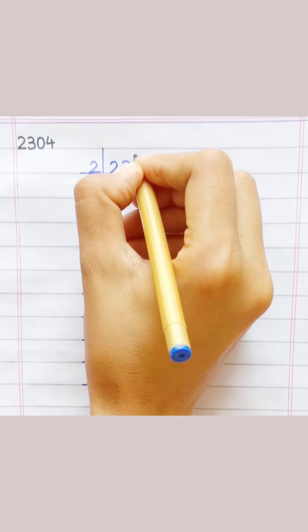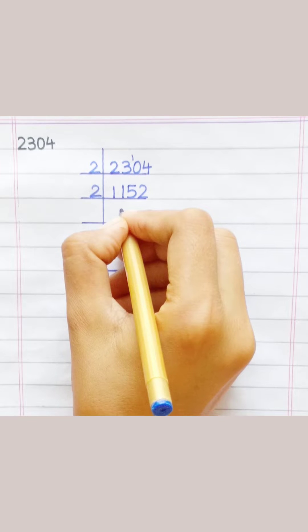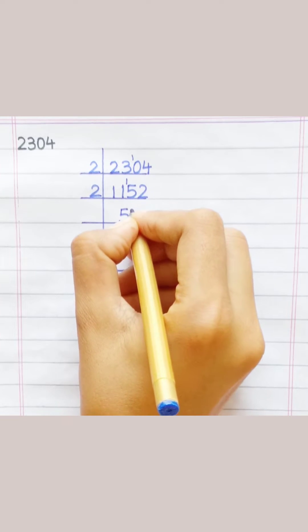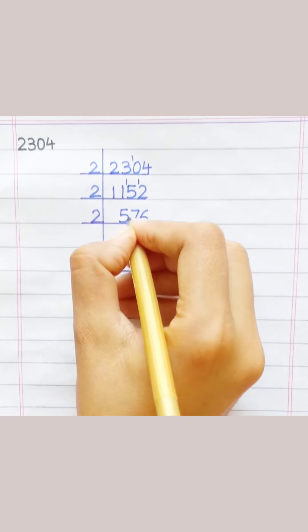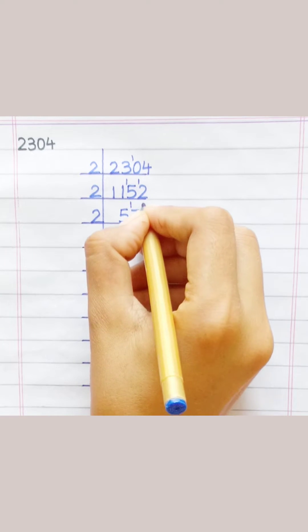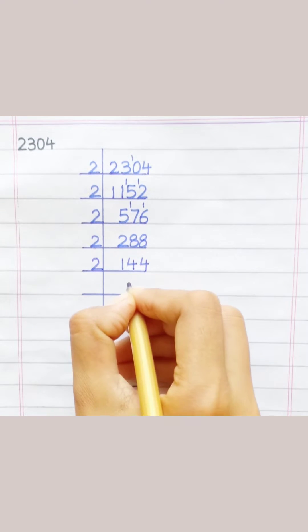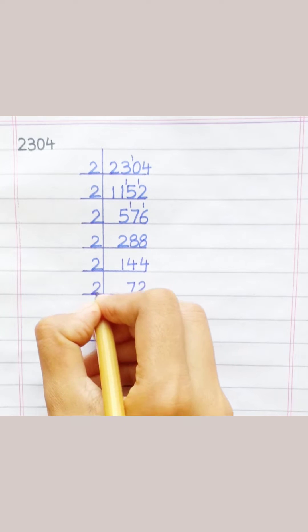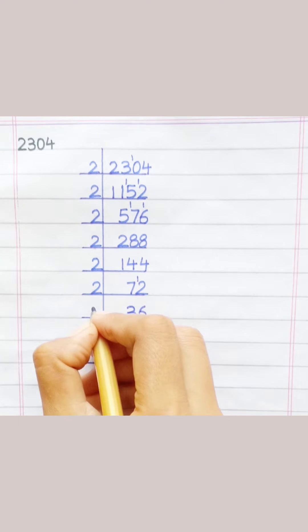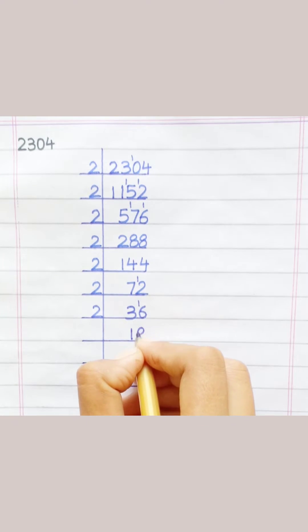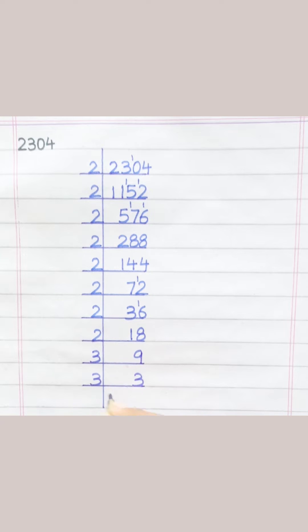2×1=2, 2×5=10, 2×2=4, 2×5=10, 2×7=14, 2×6=12, 2×2=4, 2×8=16, 2×1=2, 2×4=8, 2×4=8, 2×7=14, 2×2=4, 2×3=6, 2×6=12, 2×1=2, 2×8=16, 2×9=18, 3×3=9, 3×1=3.